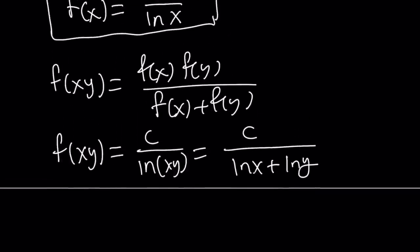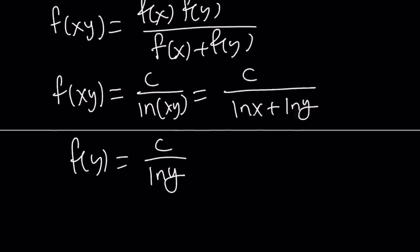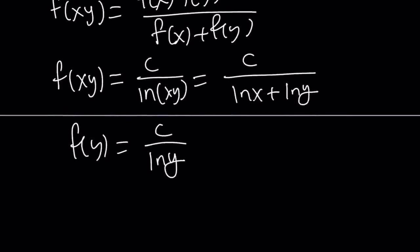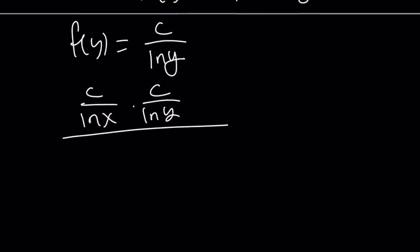And f of x is c over ln x, and f of y is c over ln y by definition, because that's f of x. And now, we can go ahead and plug everything in. Let's do it on the right-hand side and see if we're going to get the expression on the left-hand side. f of x, c over ln x times c over ln y divided by f of x, which is c over ln x plus c over ln y.